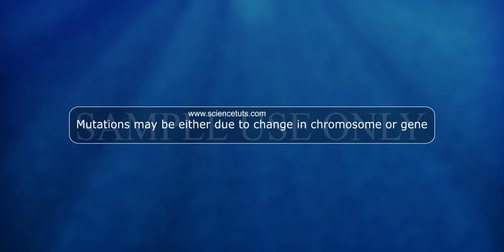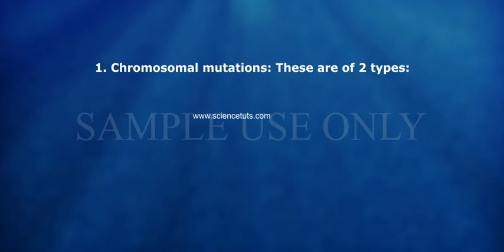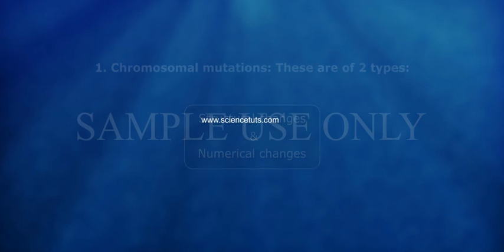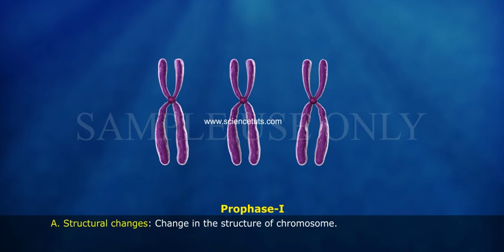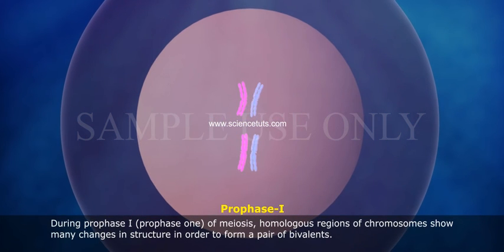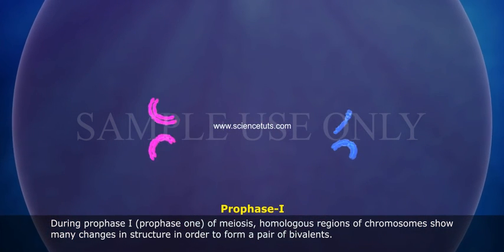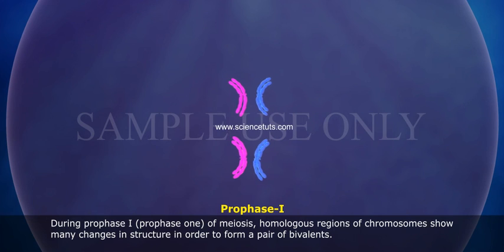Mutations may be either due to change in chromosome or gene. Chromosomal mutations are of two types: structural changes and numerical changes. Structural changes refer to changes in the structure of a chromosome. During prophase 1 of meiosis, homologous regions of chromosomes show many changes in structure in order to form a pair of bivalents.